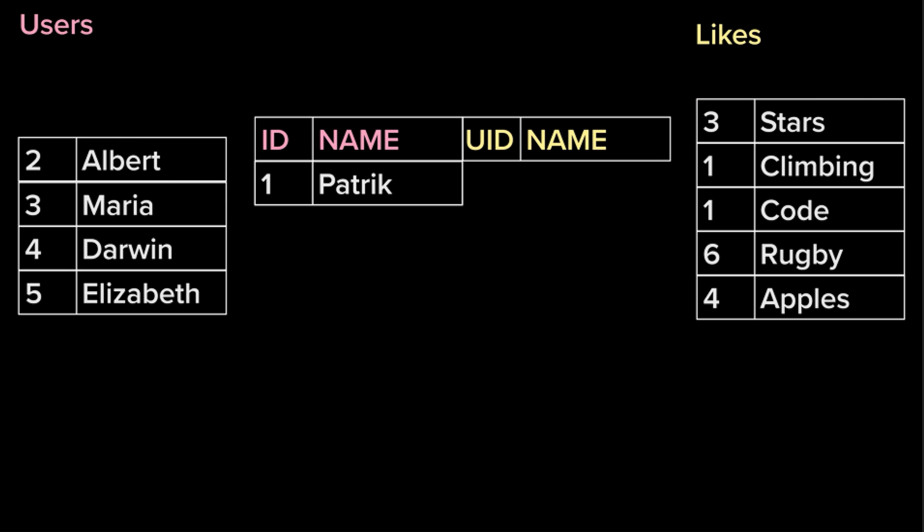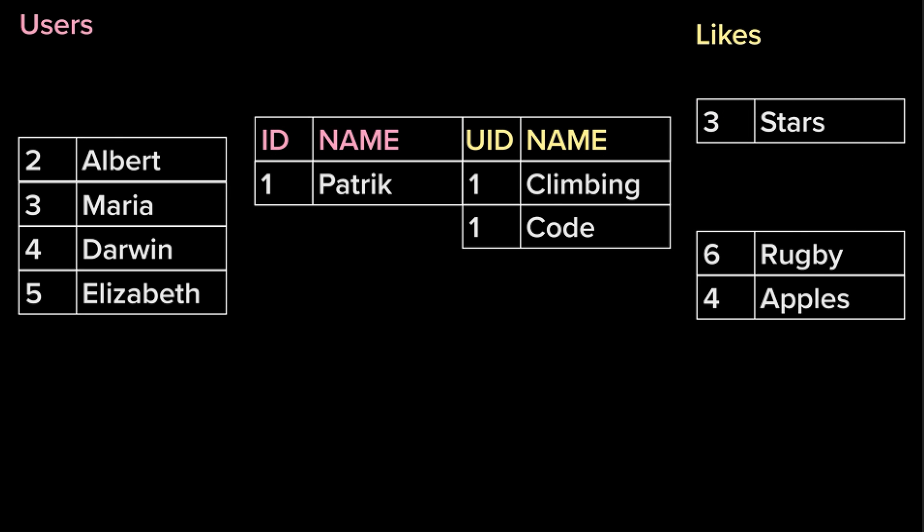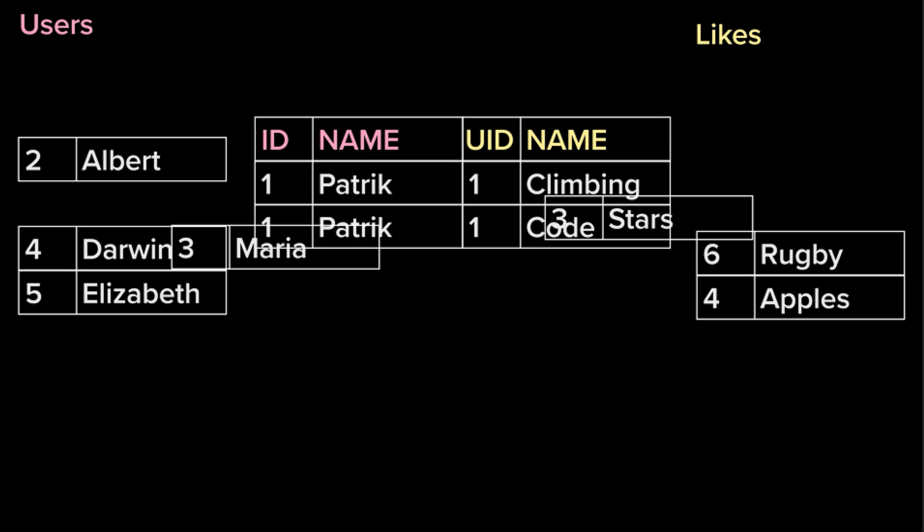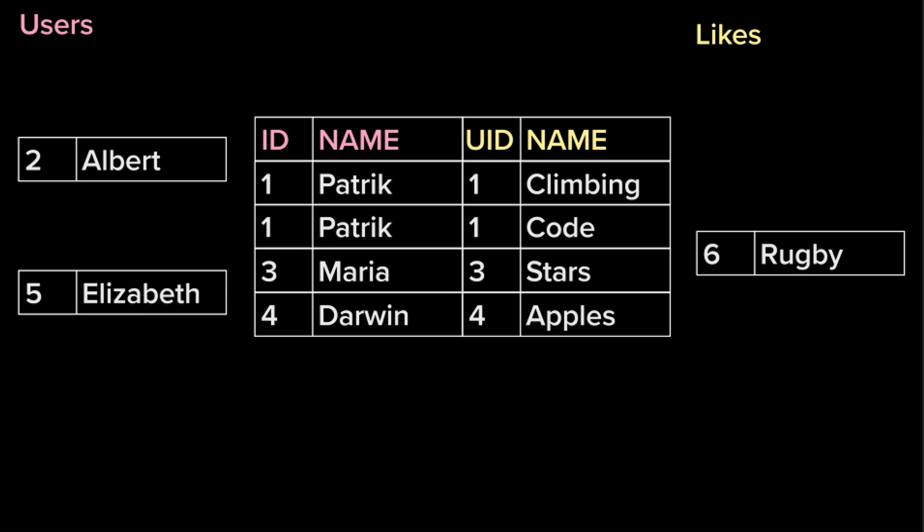So as you can see, we want to join these two tables. Patrick is going to be joined with climbing and code, and because there are two rows that are matched, you simply have two Patricks. Maria gets paired with stars, Darwin gets paired with apples. So what about Albert, Elizabeth, and rugby? These actually just get discarded. This is an inner join, which is the same thing as JOIN, because by default JOIN is an inner join.